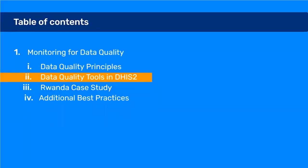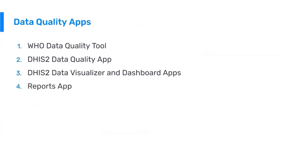Let's do a quick review of the data quality tools in DHIS2. In DHIS2, we have four key data quality apps: the WHO data quality tool, the DHIS2 data quality app, the DHIS2 data visualizer and dashboard applications, and the reports app. We'll quickly touch on each one of these to show its unique functionalities, as well as how they are able to complement one another.